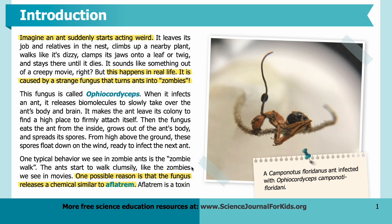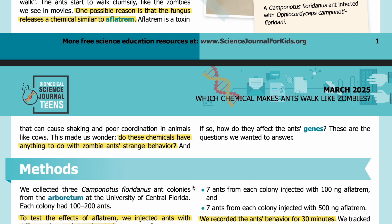The ants start to walk clumsily, like the zombies we see in movies. One possible reason is that the fungus releases a chemical similar to aflatrem. Aflatrem is a toxin that can cause shaking and poor coordination in animals like cows. This makes us wonder: did these chemicals have anything to do with zombie ants' strange behavior? And if so, how did they affect the ants' genes? These are the questions we wanted to answer.